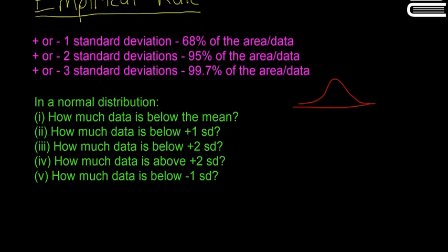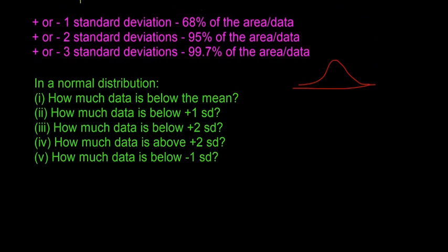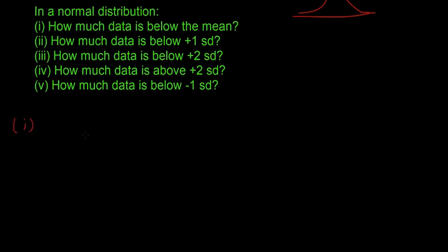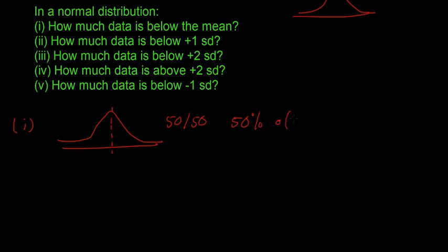Most of the time you should draw a little bell curve out when you do it, and try to remember these numbers so we don't have to keep scrolling back up. So how much data is below the mean? We know that bell curves are 50-50 symmetrical, so that means 50% of the data is below the mean, and that's always going to be true no matter what shape the bell curve is or what the standard deviation is.